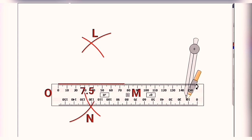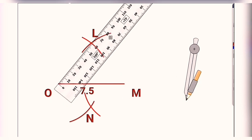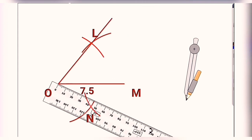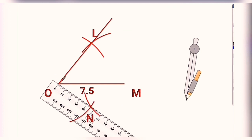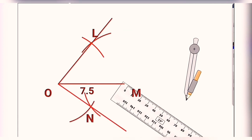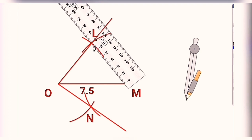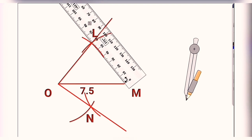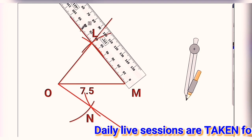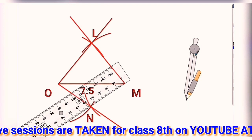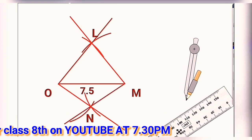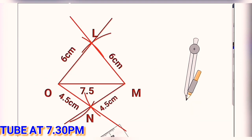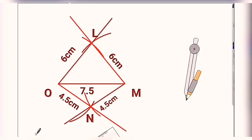The last step is to join segments OL and LM, similarly ON and NM. Then your quadrilateral is ready with proper measurements. After completing the quadrilateral, do not forget to mention the values of the sides on the diagram. Remember the shortcut: whenever one diagonal and the remaining sides are given, always begin with the diagonal itself.